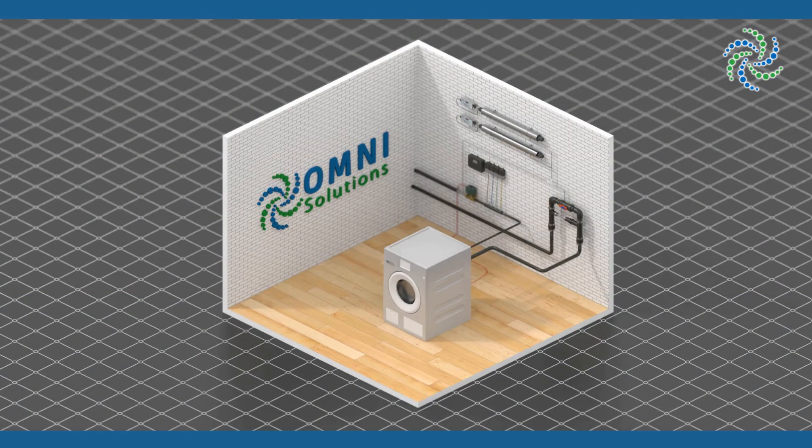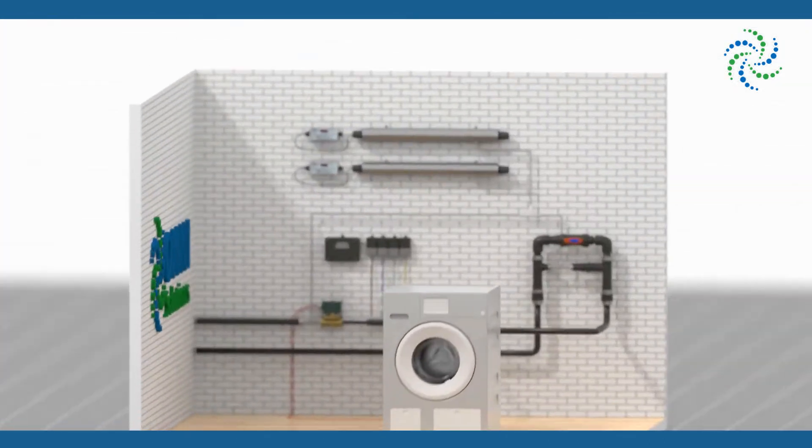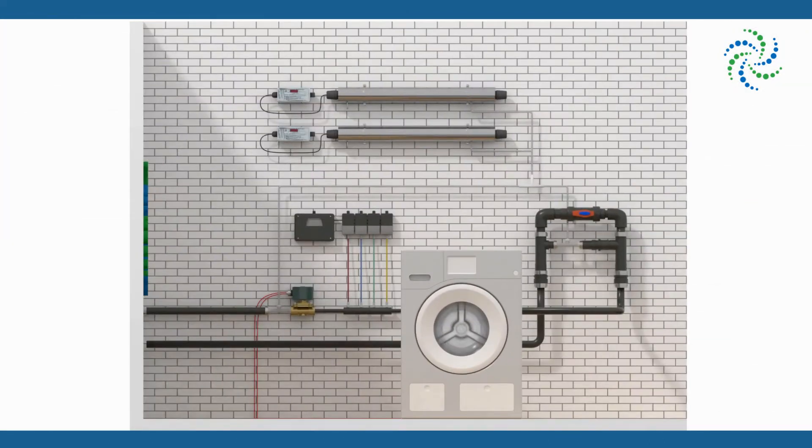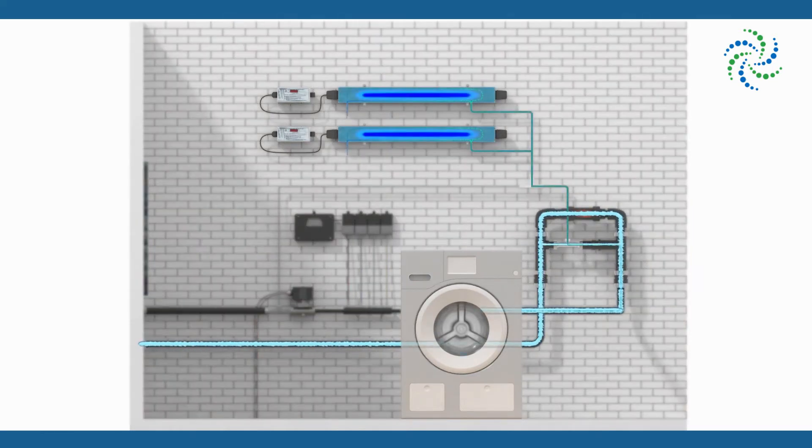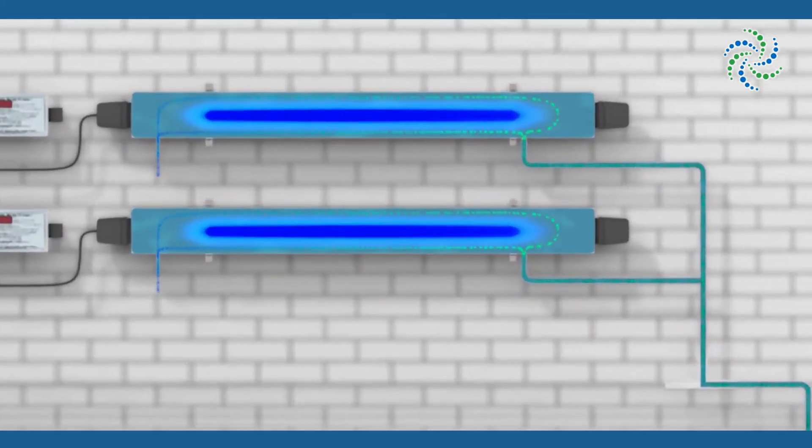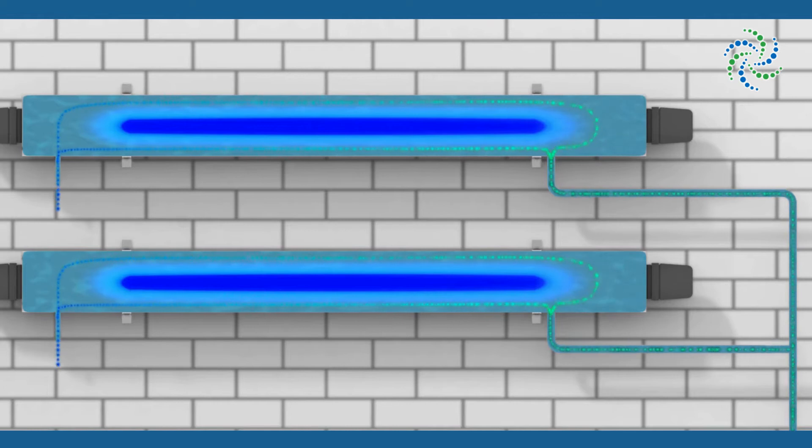Omni Solutions' patented advanced oxidation laundry system utilizes ultraviolet light, Earth's most powerful natural oxidizer, providing enhanced cleaning performance in low water temperatures for your on-premise laundry. UV light generates a powerful combination of oxidizers from ambient air, 500 times more powerful than bleach.